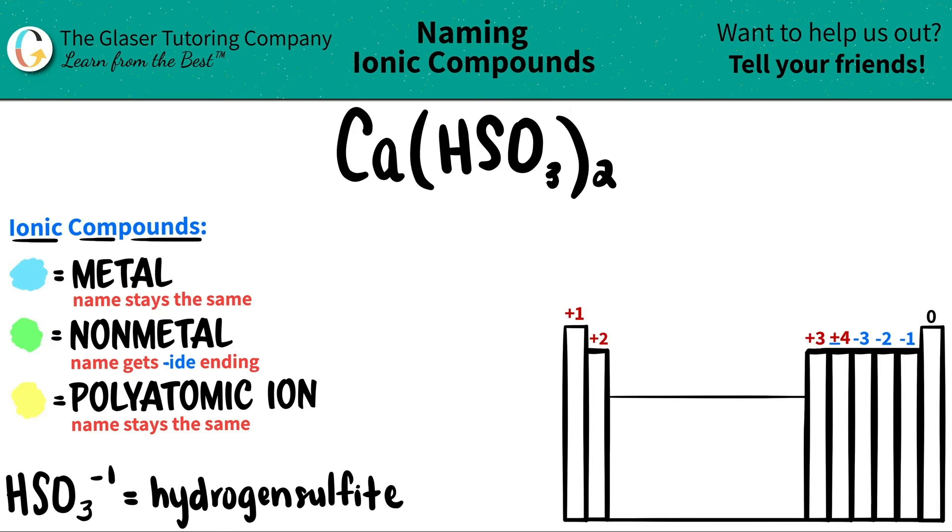And this one is kind of an obscure polyatomic. Usually you don't see this one often, but it is a polyatomic nonetheless. HSO₃, which always has a negative one charge, is called hydrogen sulfite.